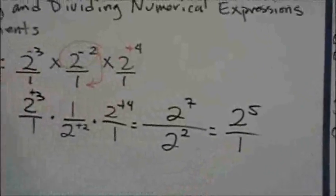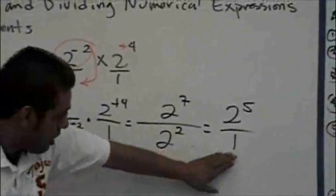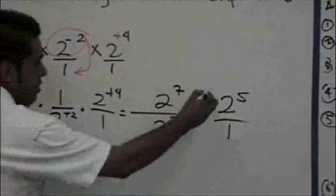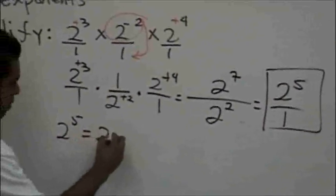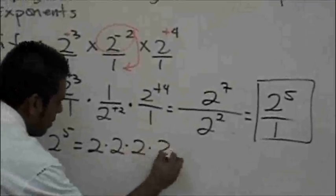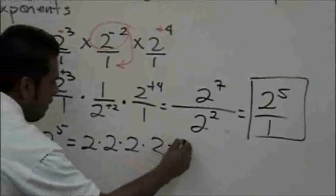And since we're working with a numerator, I put a denominator of one. Your answer might be left as two to the fifth, or they might ask you to simplify it. One, two, three, four, five.